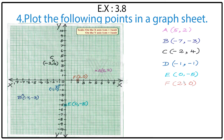Point F: (2, 0). The value 2 is for the X axis. Is X positive or negative? Positive. So from the origin count 1, 2 to the right. The Y value is 0, so there is no movement on the Y axis. Point F lies on the X axis at (2, 0). When the Y value is 0, the point lies on the X axis.